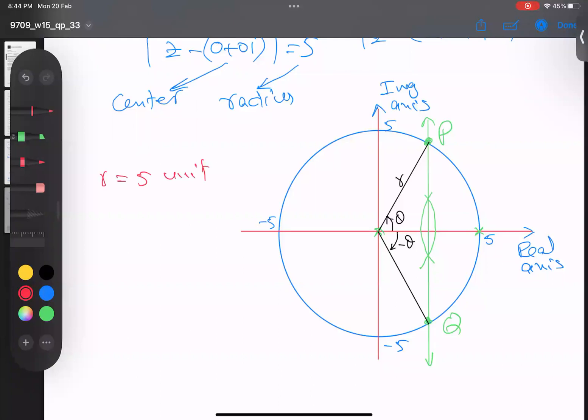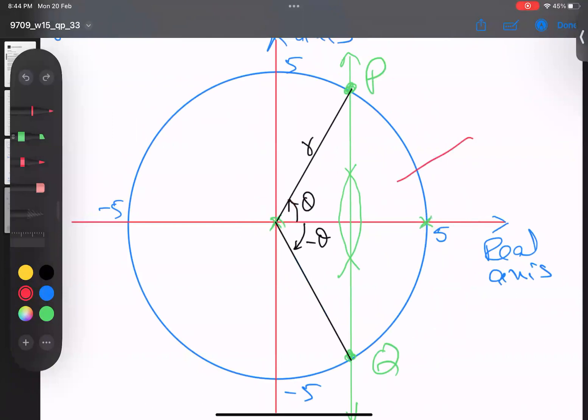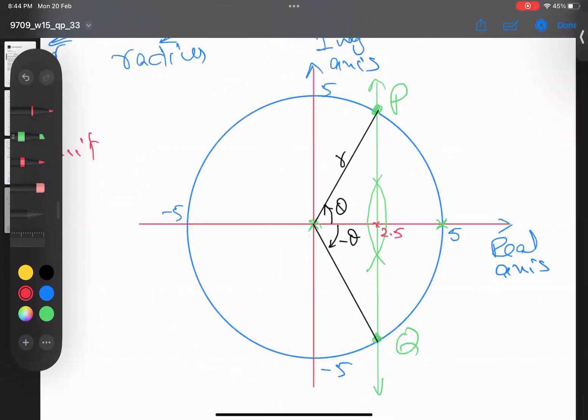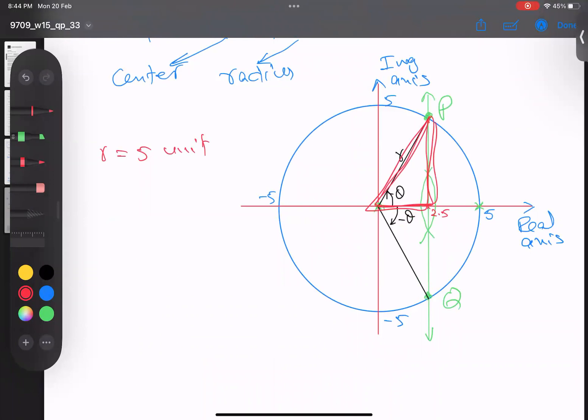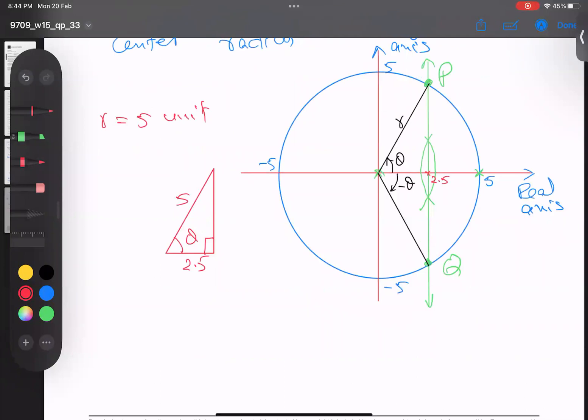I'll join these points with black lines. This angle is θ and this is also θ. This is negative θ clockwise, and this is r. The radius of the circle is 5, so r = 5 units. Only the argument is left. This is 5, this is 0, so this point is 2.5.